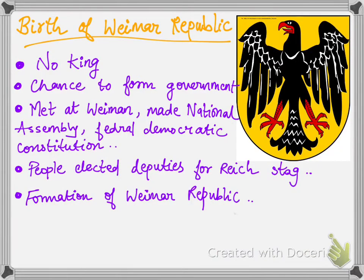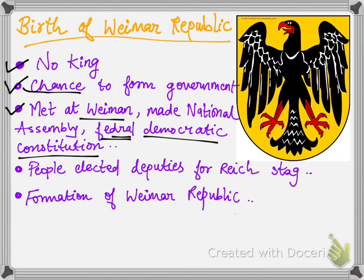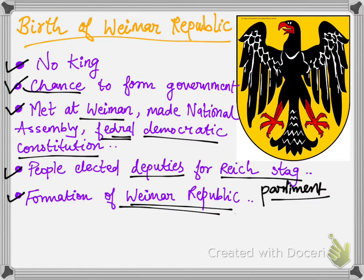Because Germany lost, the emperor of Germany abdicated — there was no king on the throne of Germany. Political parties got a new chance to make a good government, and this time they wanted a democracy. At Weimar, many people met and formed a National Assembly which created a federal structure — a constitution with both state government and central government. Universal franchise was done, and people elected deputies for the German parliament, also called the Reichstag. This new body was called the Weimar Republic.